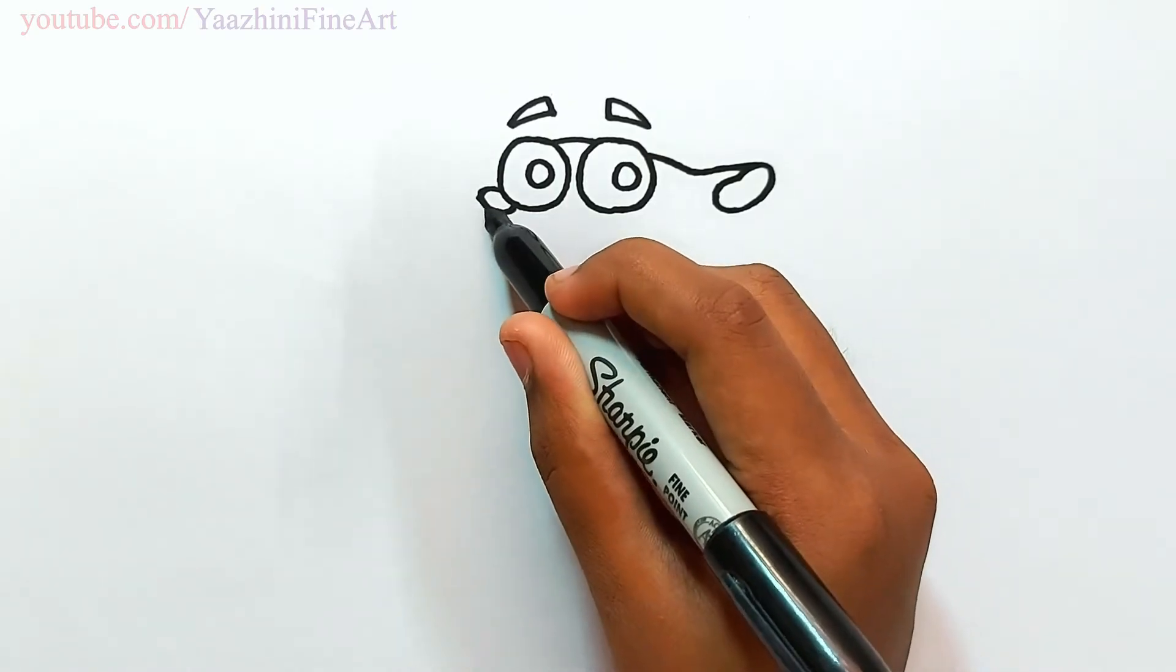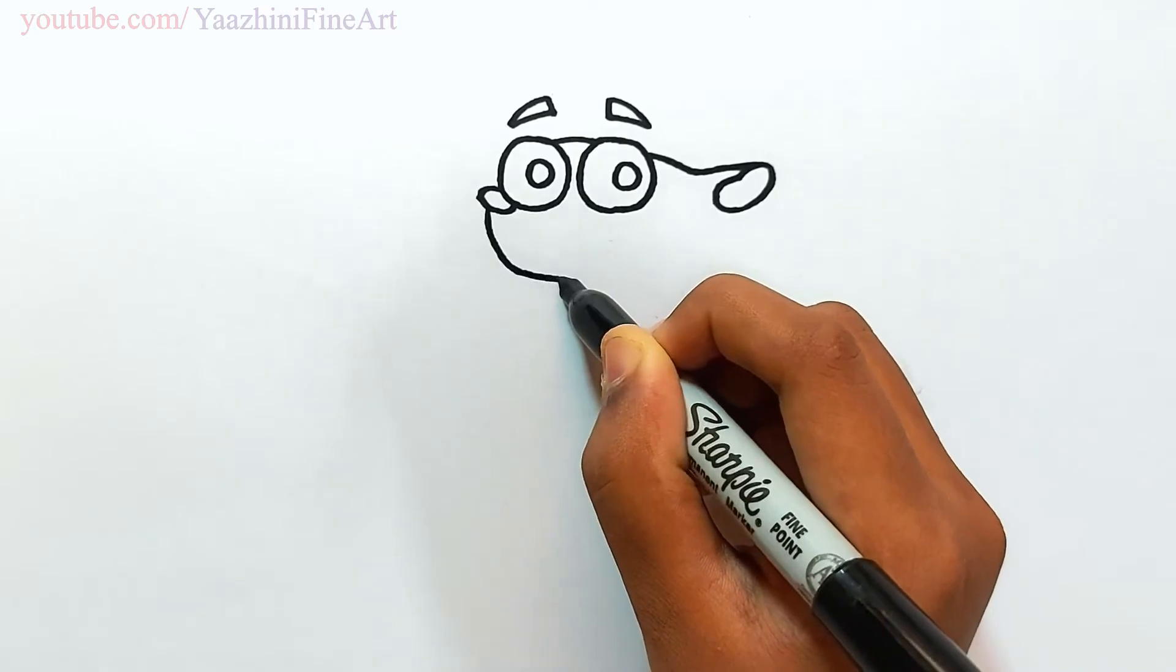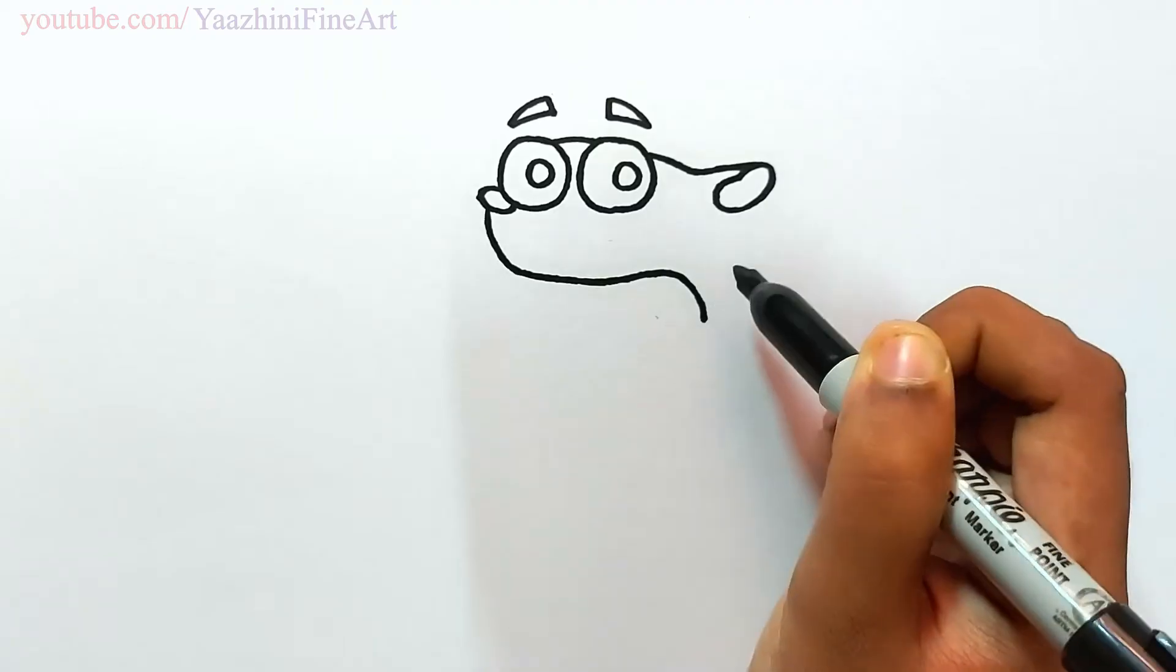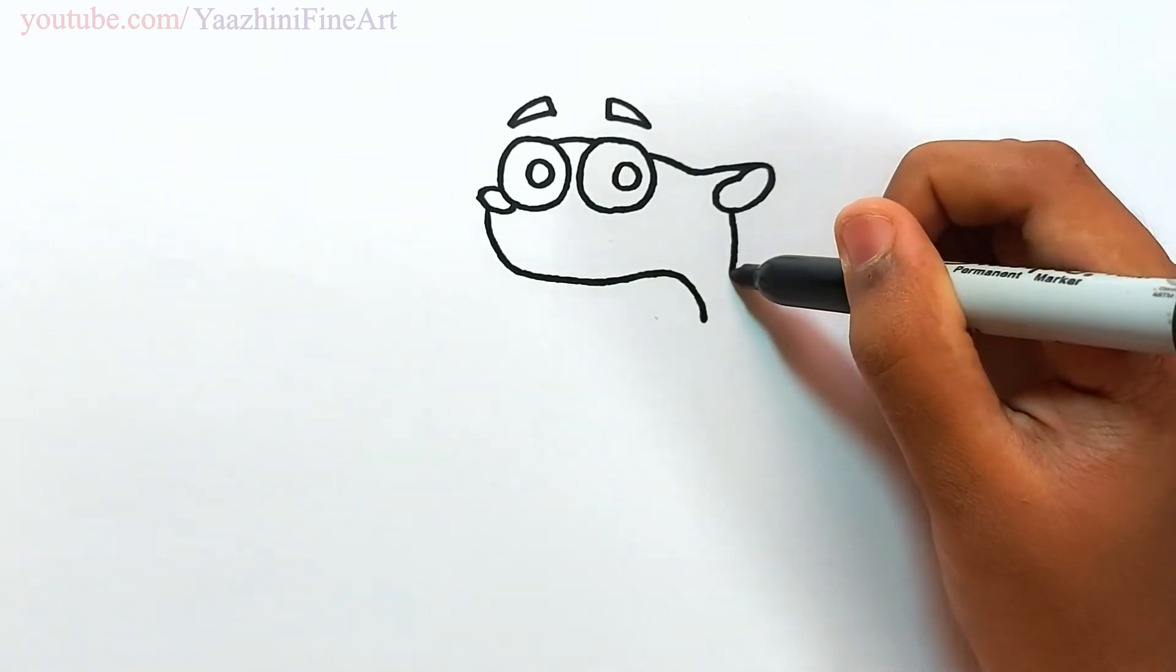From here, continue to draw his face. Come down, curve it, go horizontally. Curve it and then come down. From there, come down to join his face.